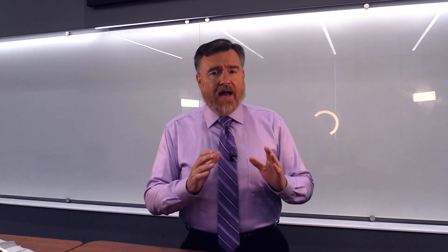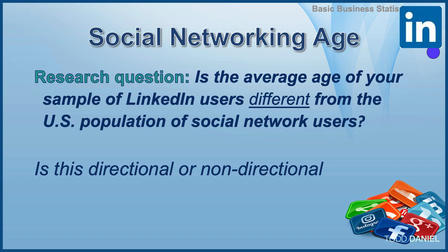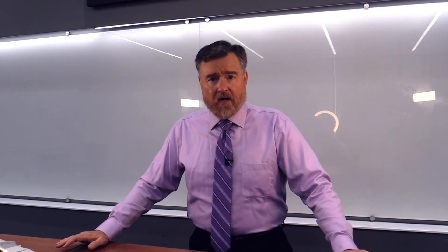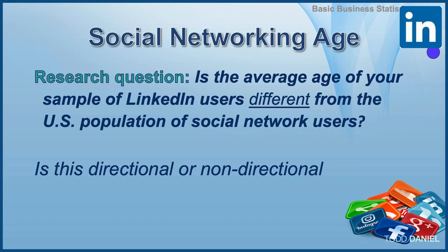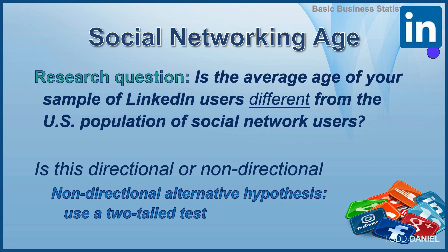Let's start with our research question and make some determinations. Is the average age of LinkedIn users different from the U.S. population of social networking users? This research question forms our alternative hypothesis, so we need to know: is this directional or non-directional? Have we established a direction of change — older or younger — or have we just said there will be a difference without specifying direction? Because we did not specify a direction, this is a non-directional alternative hypothesis, and therefore we will use a two-tailed test.